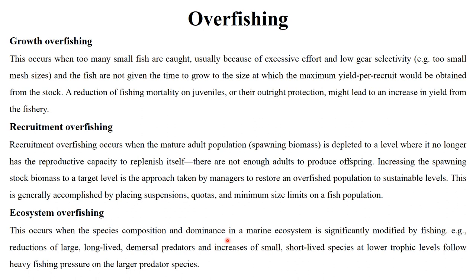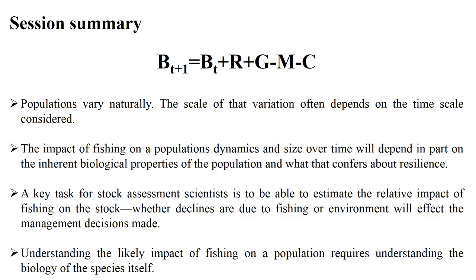Ecosystem overfishing is a broader concept: harvesting too many large predator fish increases the dominance of small pelagic species. For example, if you over-harvest tuna or large fish, the number of small fish in the ocean increases. This leads to the concept of 'fishing down the food web' — as top predators are harvested, the mean trophic level declines and small herbivorous fish populations increase.